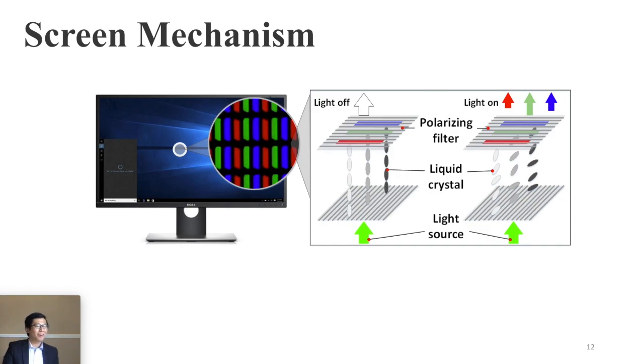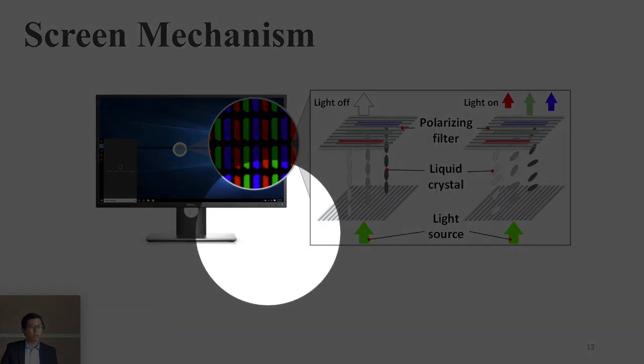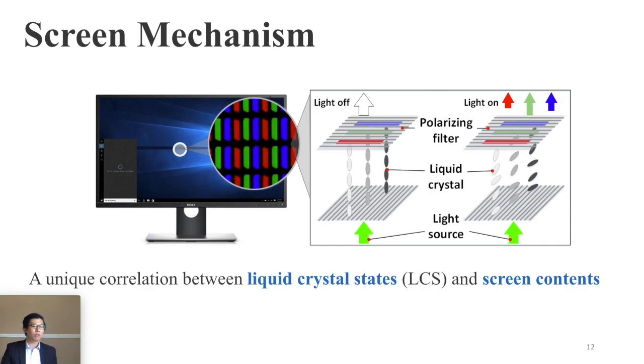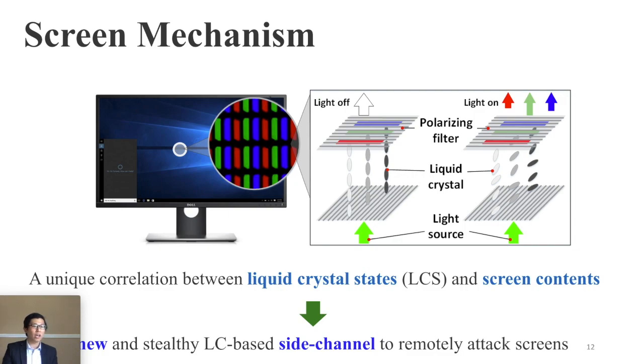In our subphysical system security domain, we would like to first explore the mechanism of the target. For the screen, we find a very common mechanism among all popular screens on the market - the liquid crystal state. The screen content showing on the display is generated or controlled by liquid crystal. We can see there is a deterministic relationship between the liquid crystal state and the screen content. So if the attacker can monitor the liquid crystal state, then it will enable the attacker to monitor the screen content. So this is our hypothesis: by using this LC-based side channel, we can conduct a new side channel attack to remotely attack screen.